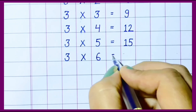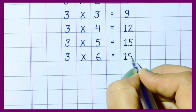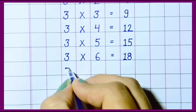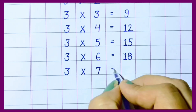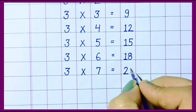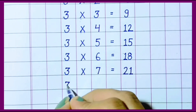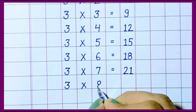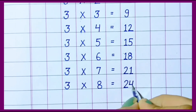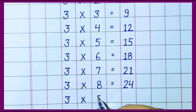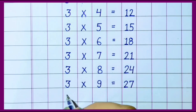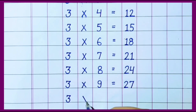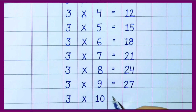3 times 6 is 18. 3 times 7 is 21. 3 times 8 is 24. 3 times 9 is 27. 3 times 10 is 30.